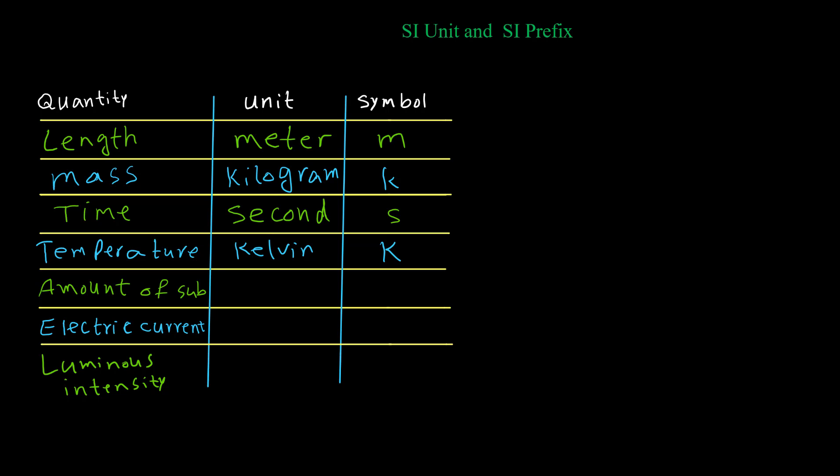The amount of substance that is very important in chemistry has mole unit and the symbol is almost the same but it doesn't have E at the end. The last two quantities for SI mostly belong to physics. Electric current, the unit is ampere and the symbol is A, and luminous intensity, the unit is candela and the symbol is cd.